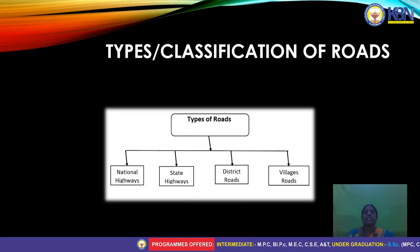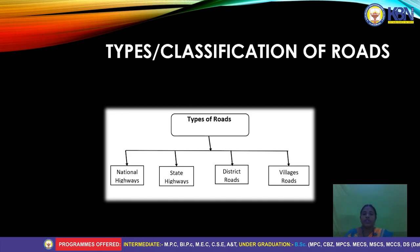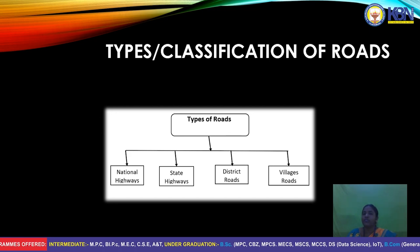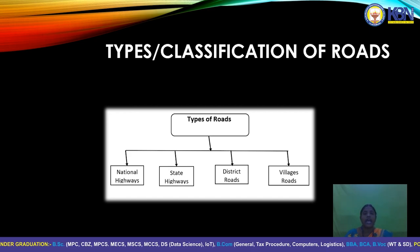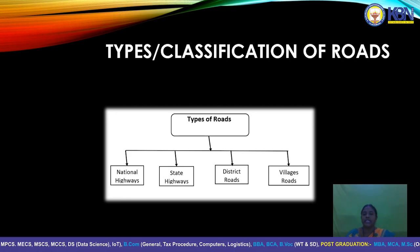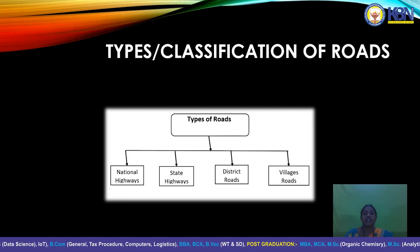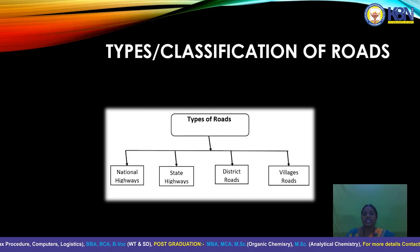Types and classification of roads: road transport is very useful for carrying goods and people from one place to another. There are four types of roads in the classification. First, national highways. Second, state highways. Third, district roads. Fourth, village roads.